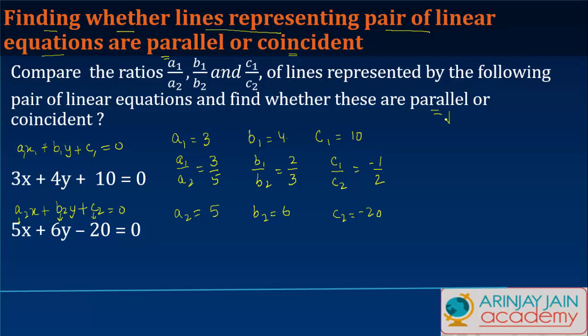Now in order for the line to be parallel, we know what is the condition for the two lines to be parallel. The lines will be parallel if a1 upon a2 is equal to b1 upon b2. But that is not true in this case, so the lines are not parallel.